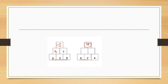We chose 4 in our mind and 2 in our fingers. After 4: 5, 6. So 4 plus 2 is equal to 6. We combine 4 plus 2 and the answer we got is 6.